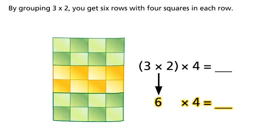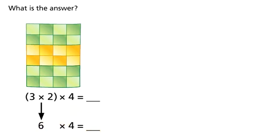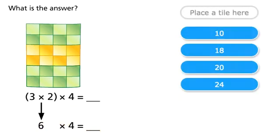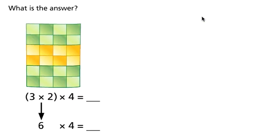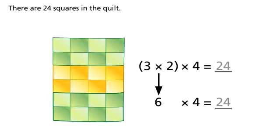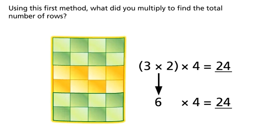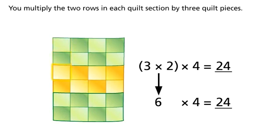What is the answer? There are 24 squares in the quilt. Using this first method, what did you multiply to find the total number of rows? You multiply the two rows in each quilt section by three quilt pieces.